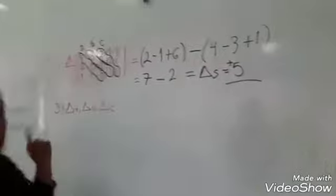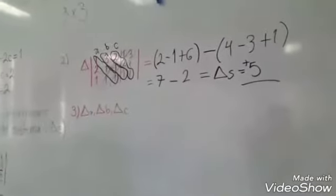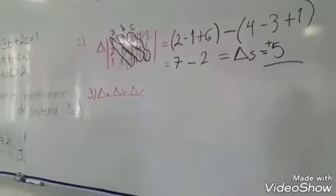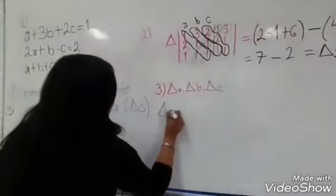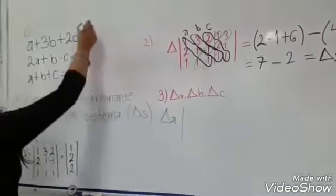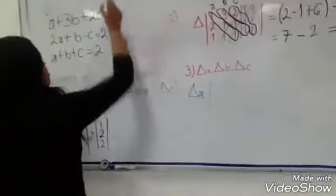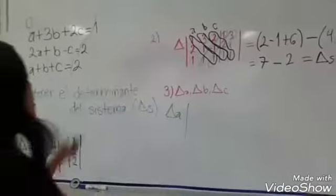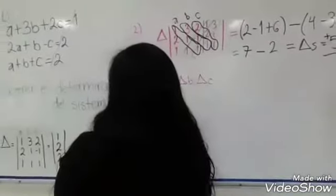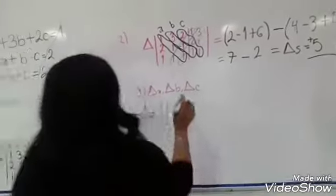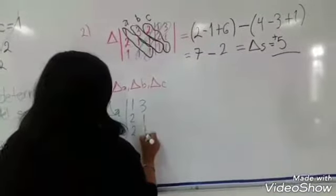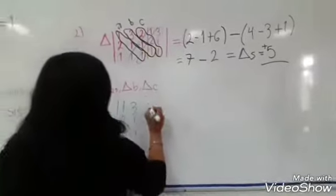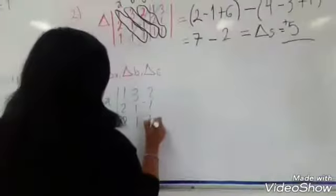Ahora vamos a sacar el determinante del valor de A. Para aplicarlo, vamos a hacer exactamente lo mismo, solamente que en vez de poner la variable A en la primera columna del determinante del sistema, vamos a poner los resultados de las ecuaciones. Primero es el 1, luego es el 2, y luego otra vez es el 2. Luego se ponen los valores de B, que ya los tenemos: 3, 1, 1. Y los valores de C, que son 2, menos 1 y 1.